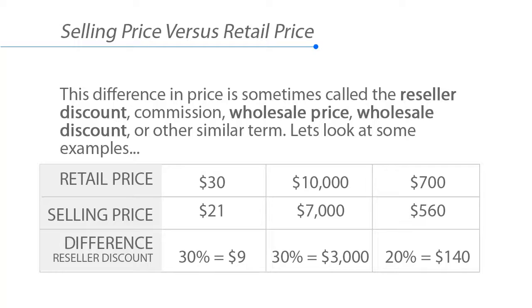Next example: if the retail price that consumers will pay for the product is $10,000, and we sell it to the reseller or distributor for $7,000, that's a 30% discount of $3,000.